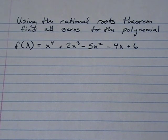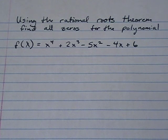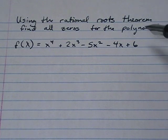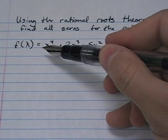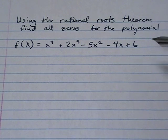Today we've been asked to use the Rational Roots Theorem to find all zeros for a polynomial. The Rational Roots Theorem states that if there are rational roots to a polynomial, those roots are going to be the constant term and all of its factors divided by the leading coefficient and all of its factors.